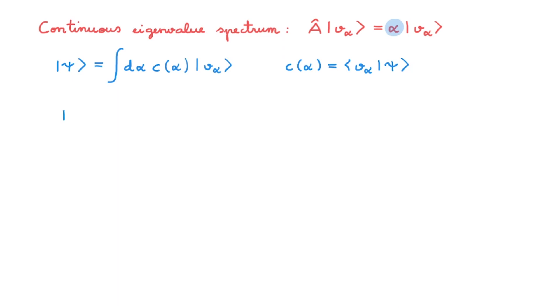So in general, we must consider the probability of measuring alpha in some range between alpha 1 and alpha 2. From the videos on measurements, we know that the probability of obtaining this result is equal to the integral of the probability density of the relevant interval. Which, as usual, we can write in terms of the expansion coefficients.